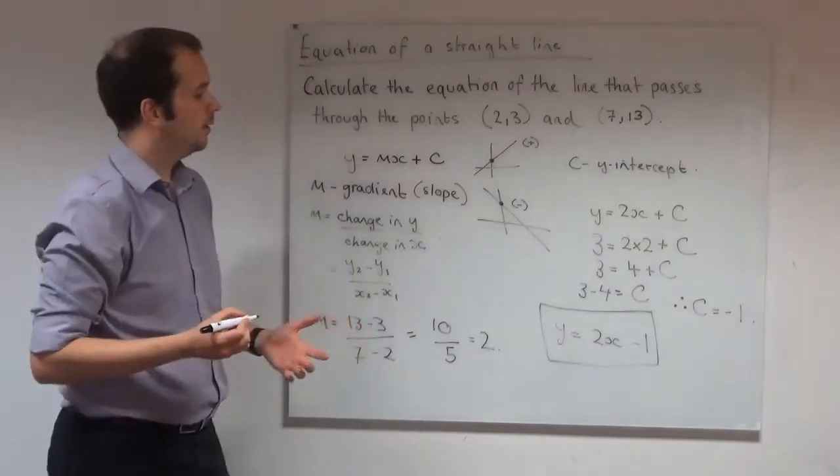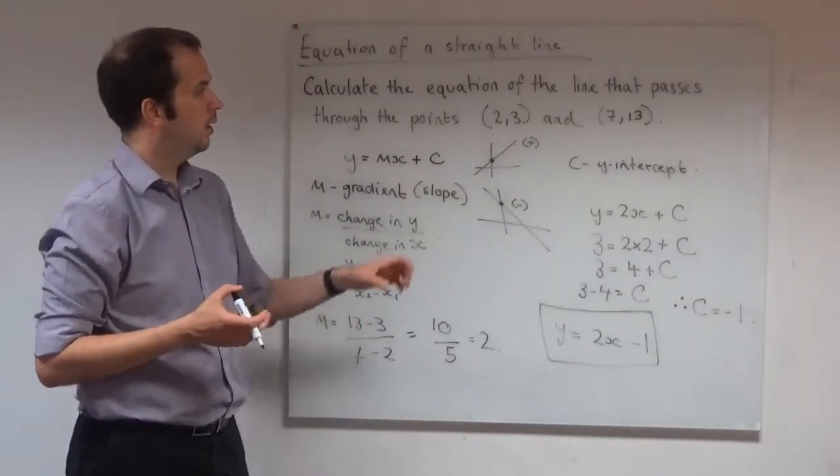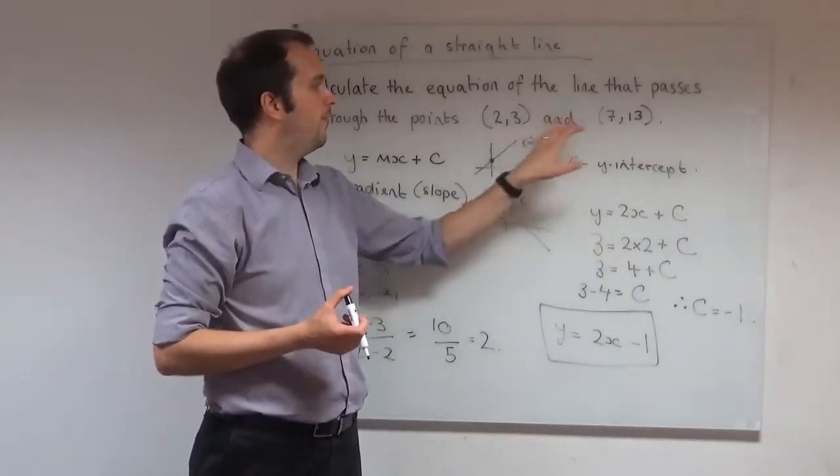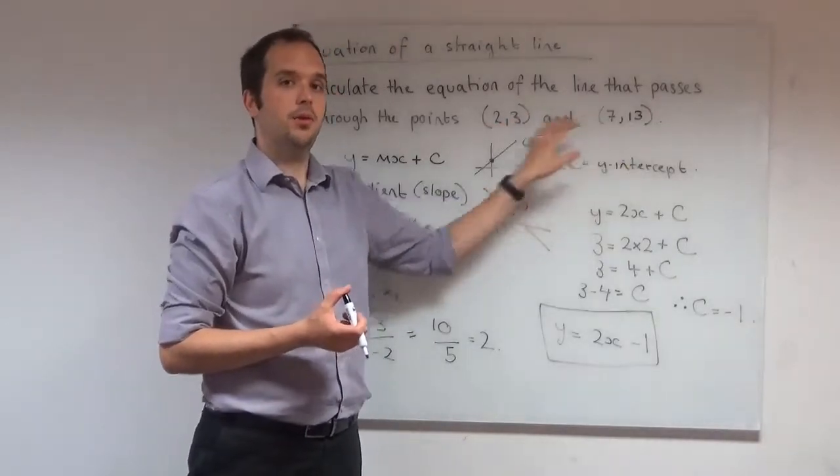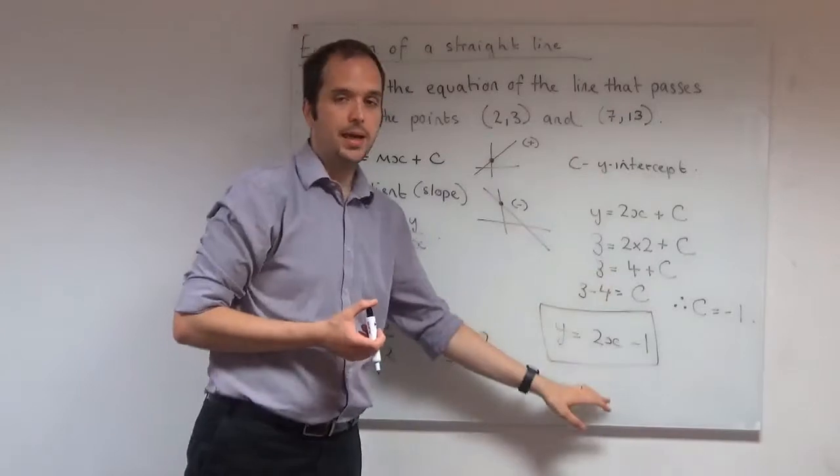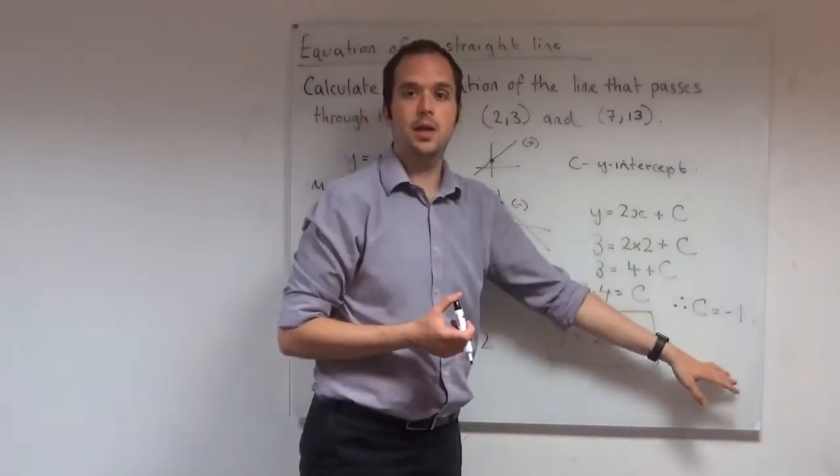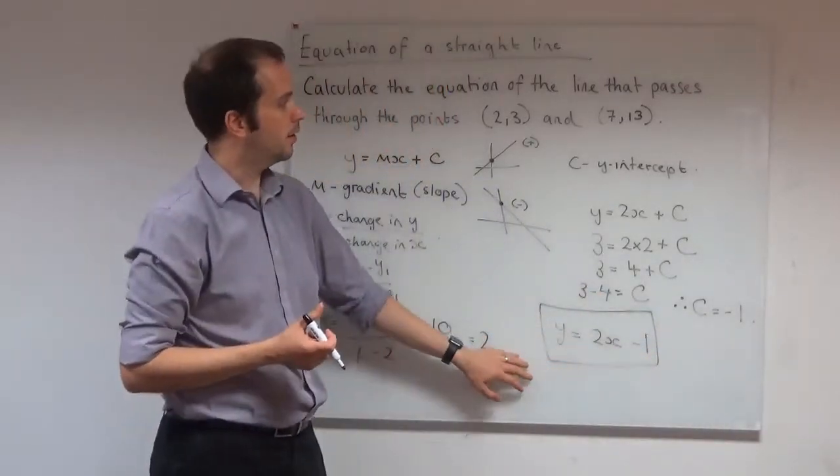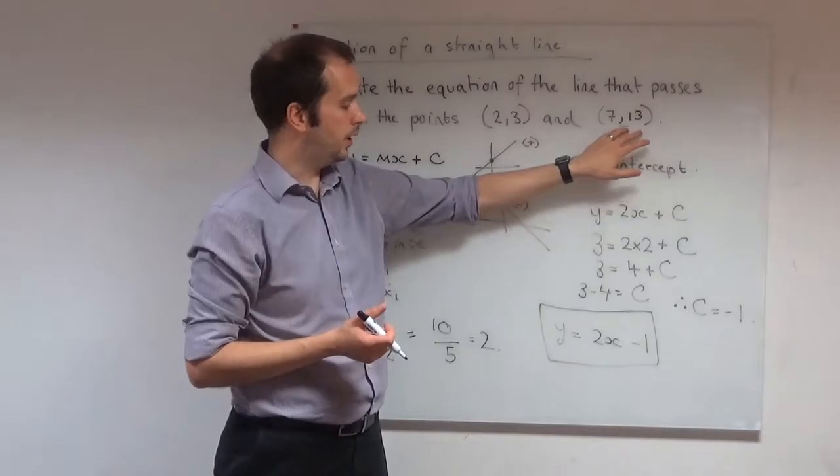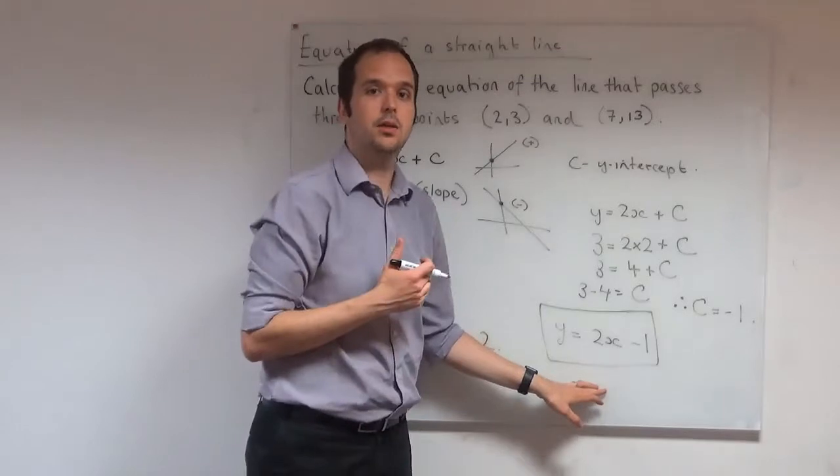It's always a good idea to check your answers whenever you can. We're going to check our answer here. We found the straight line that passes through these two points. So we know these two points must satisfy this equation. We know this one does because we just use that one to find our c. So if this line is correct, these two points, this coordinate here, should also satisfy this equation. Let's check it does.